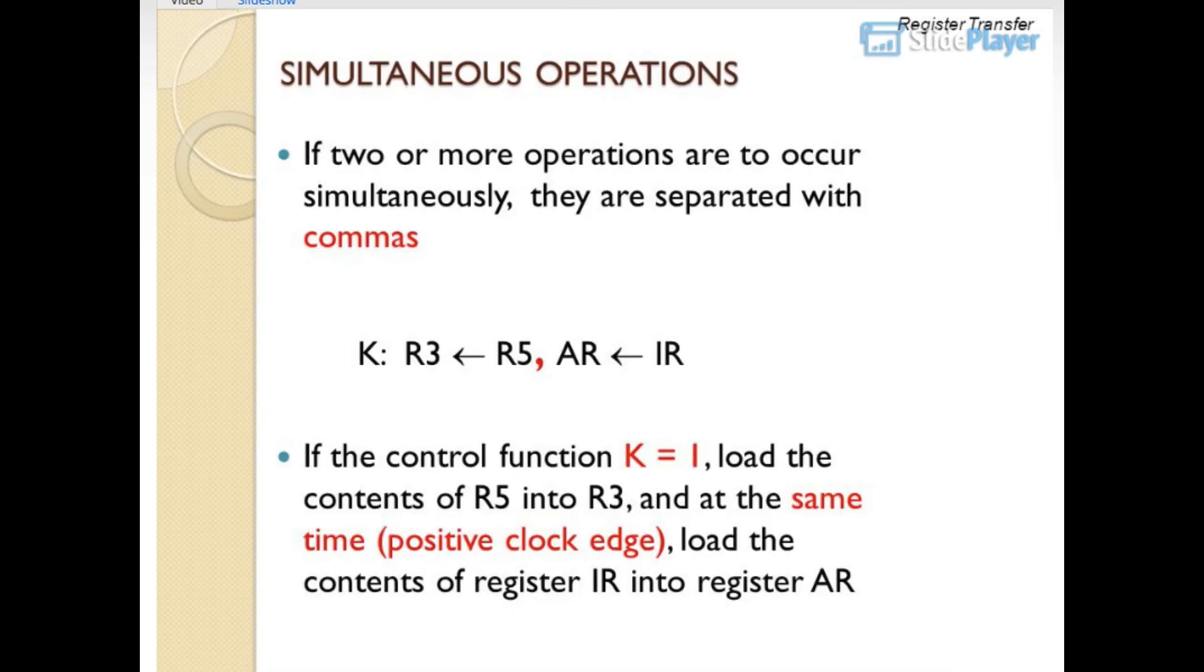Simultaneous operations: if two or more operations are to occur simultaneously, they are separated with commas. K: R3 gets R5, R gets IR. If the control function K equals 1, load the contents of R5 into R3, and at the same time on the positive clock edge, load the contents of register IR into register R.